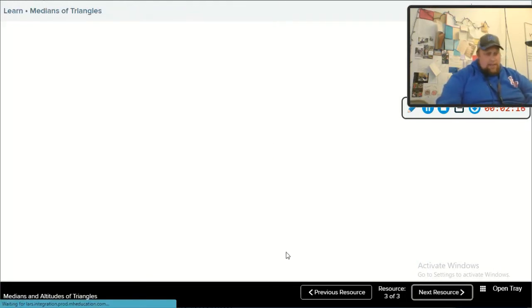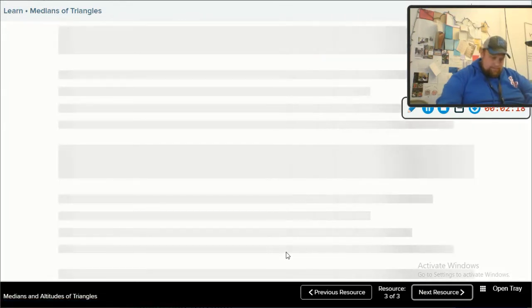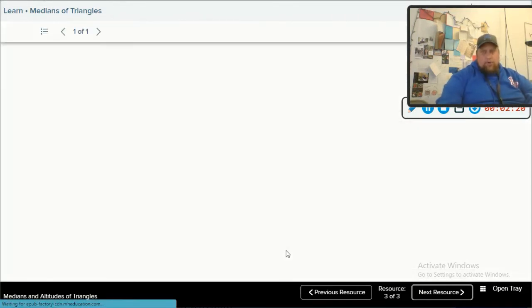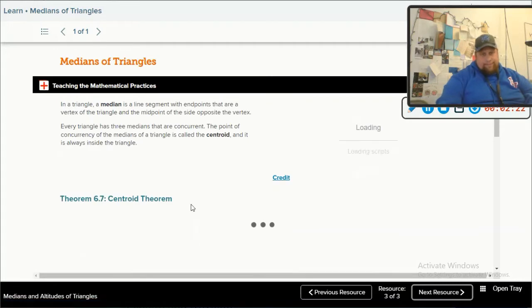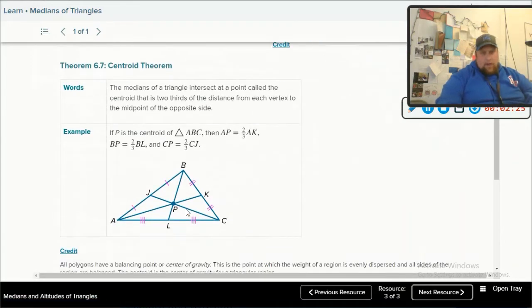Because our last is the centroid theorem. Centroid. So median lines, by the way, what it's talking about, a median line goes from a vertex to the middle of the opposite line. So this is the opposite side of the triangle, and it connects right here, cutting it in half. And that's what median lines do, and they meet together here at the centroid.